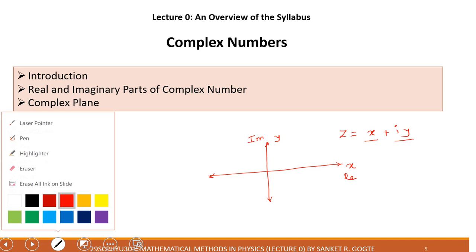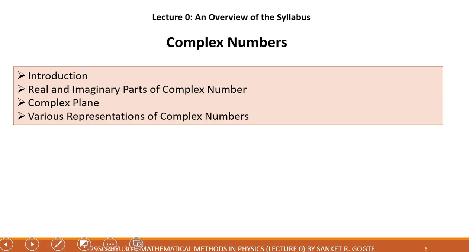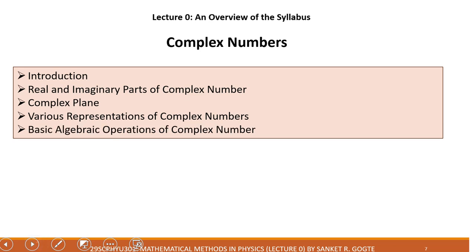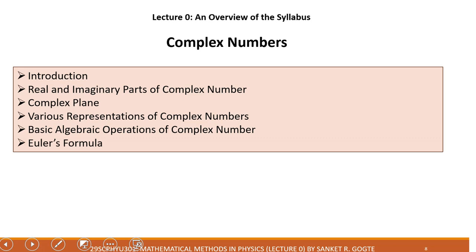Then we will study various representations of complex numbers. Any complex number can be written as z equals x plus iy, but there are two more representations: polar representation and exponential representation. Next is basic algebraic operations — addition, multiplication, division, and subtraction. Then we have Euler's formula, which is very important not only for performing operations on complex numbers but also in many derivations across physics and science in general.